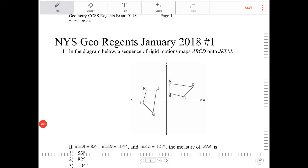In the diagram below, a sequence of rigid motions maps ABCD onto JKLM.